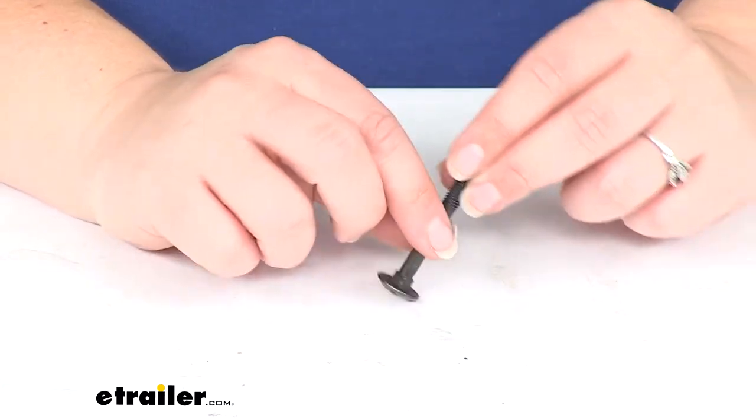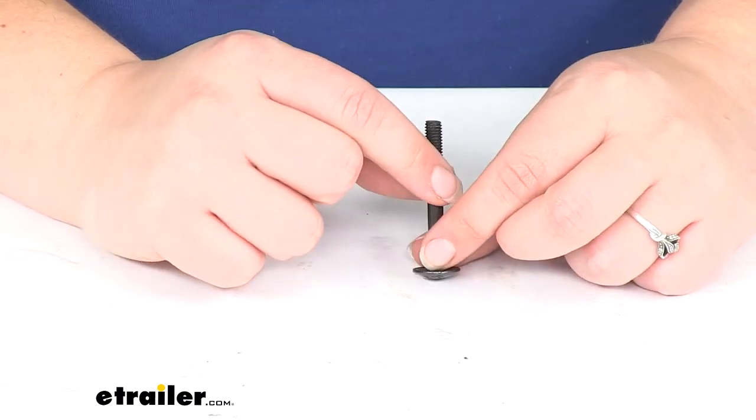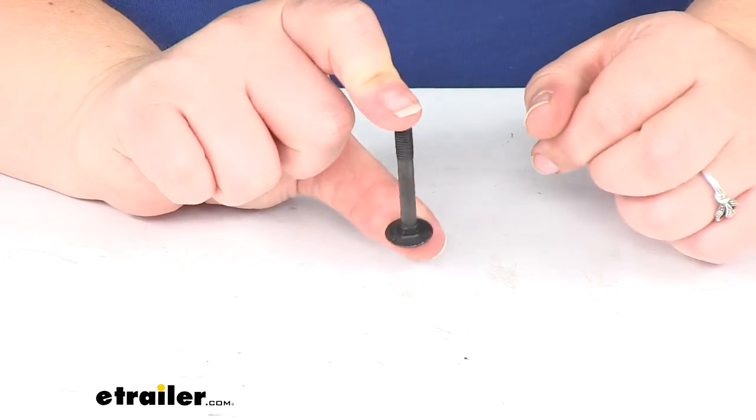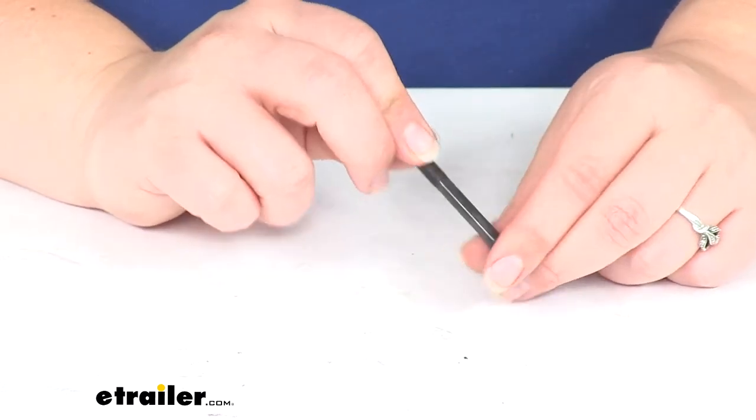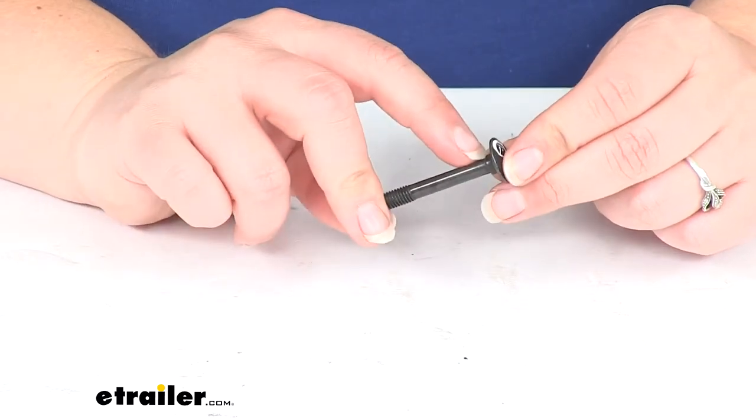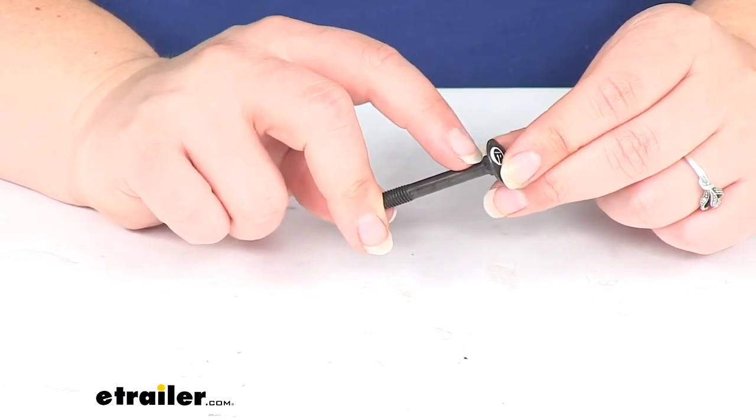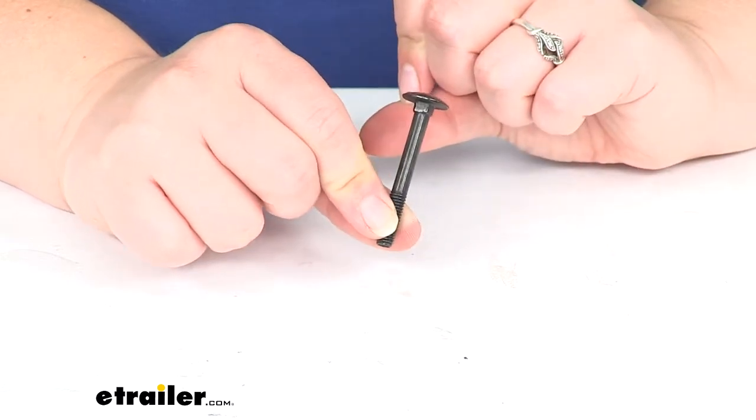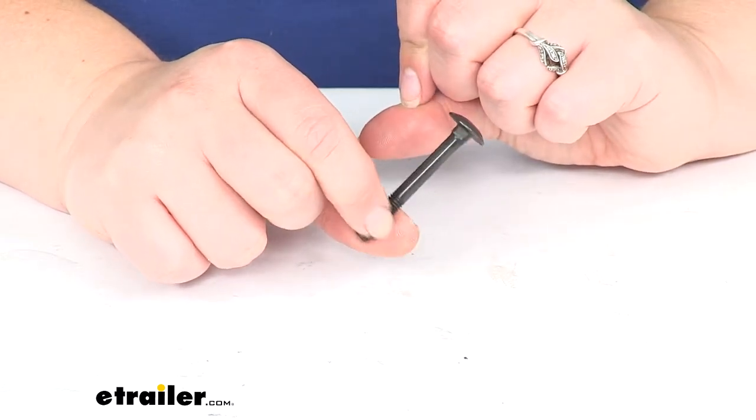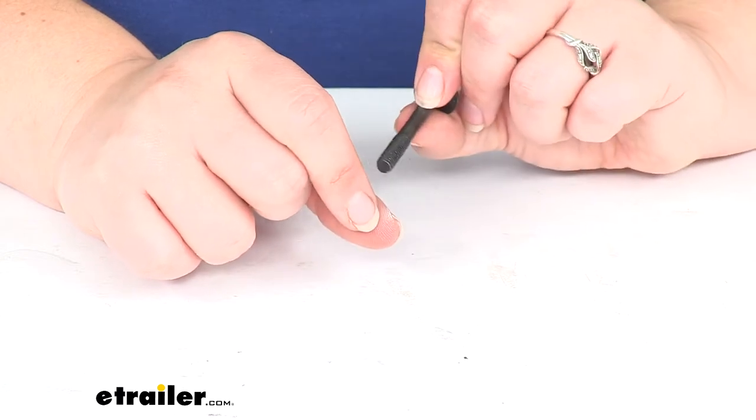This is going to be that bolt that goes in and keeps our attachment point secure on our vehicle. It's going to keep everything tightened down. It does have the carriage head so it has that little square shoulder on it to drop down through a square hole and keep that secure so our bolt doesn't turn on us as we tighten down the nut on the other side.